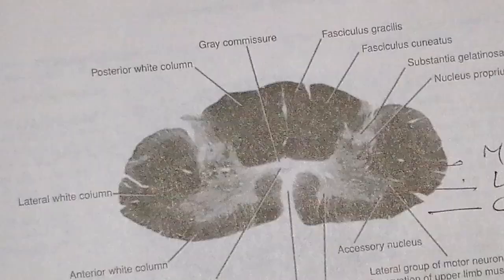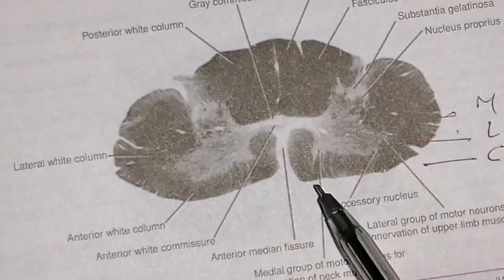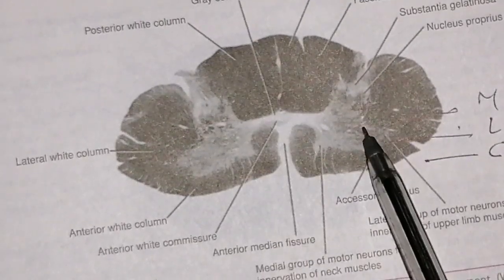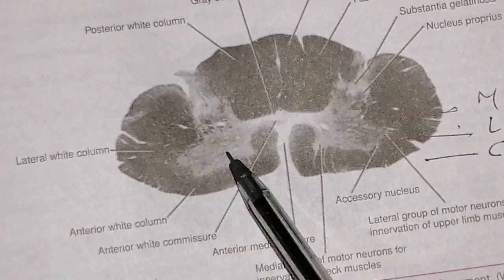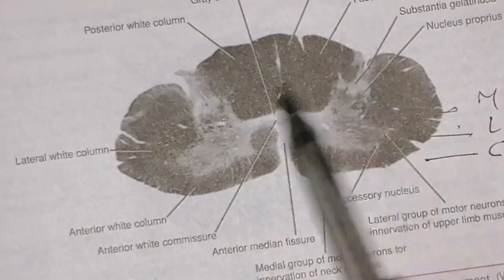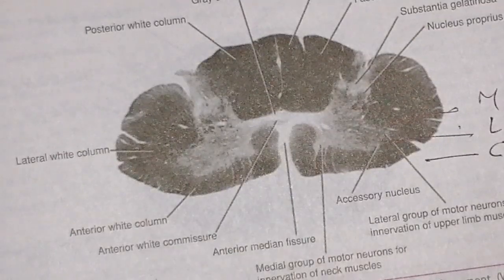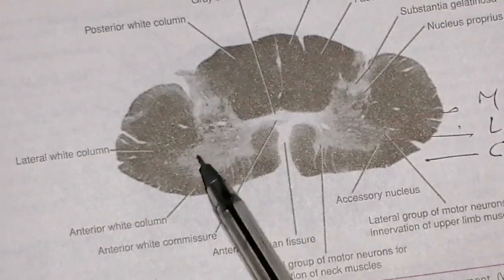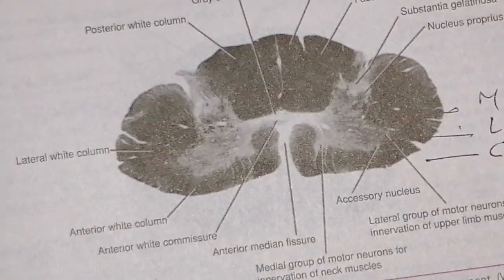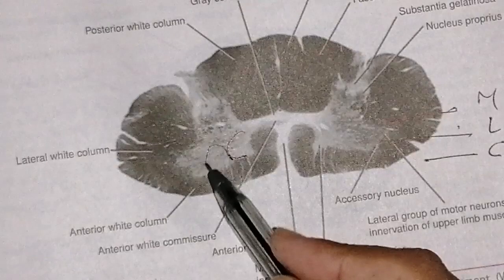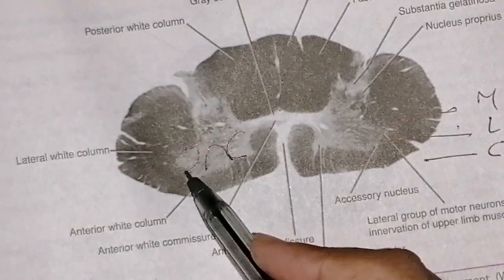Let's revise the gray matter in one minute. Gray matter has a butterfly shape. Classifications are: anterior gray matter, lateral gray matter, and posterior gray matter. In the anterior gray matter, nerve cells are divided into larger and smaller types — alpha efferents and gamma efferents. By morphology, we have three groups: medial, central, and lateral.